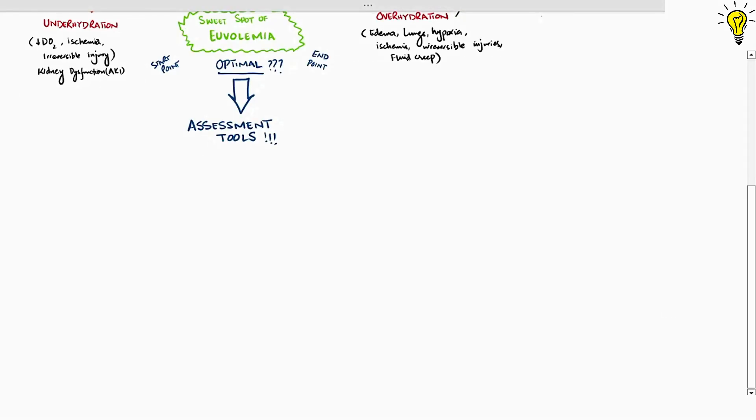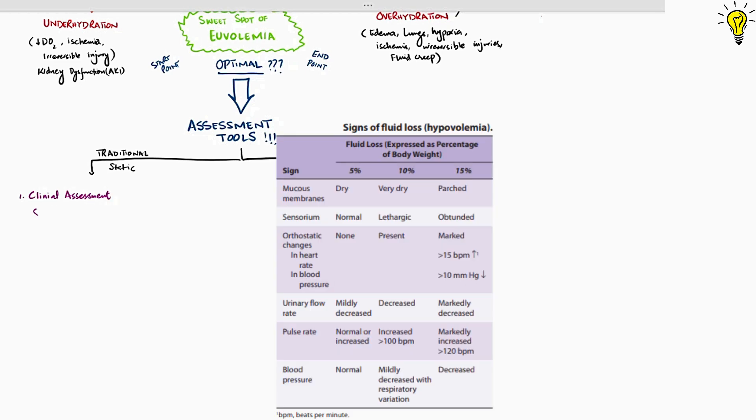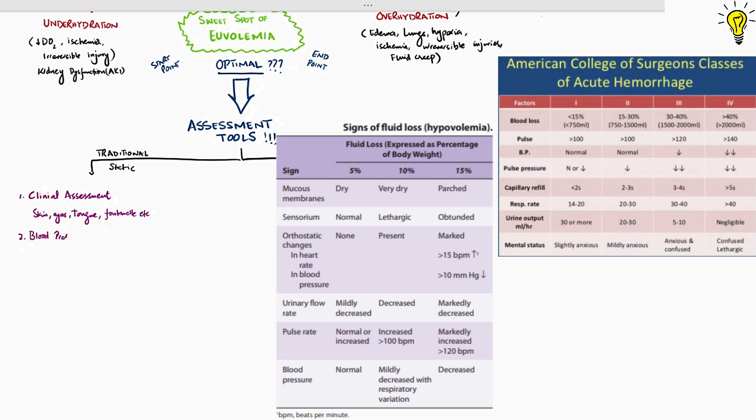The assessment tools are traditional static ones or advanced dynamic ones. In case of static traditional tools, these include the clinical assessment tools such as skin, tongue, fontanel, capillary refill time, suggesting percentage of water loss in a very crude way. Similarly, blood pressure, pulse, and urine output can give assessment of status of hydration and volume losses.